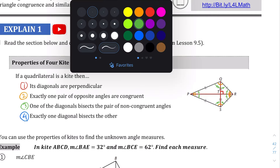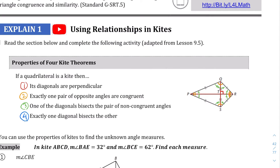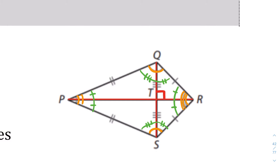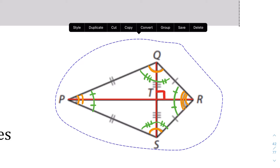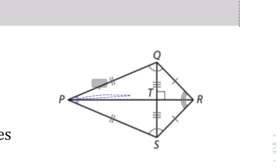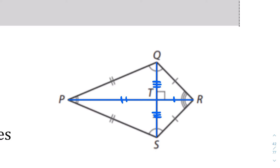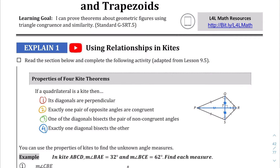Lastly, the fourth part of this theorem says that exactly one diagonal bisects the other. If we were to take a look at the diagonals again, this is the diagonal that's bisected. Those are different lengths, but exactly one of the diagonals is going to be bisected. So those are the four properties of a kite.